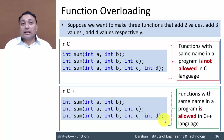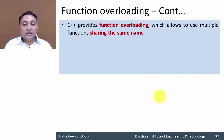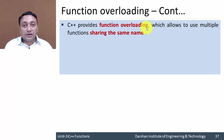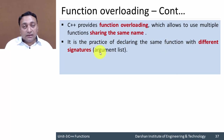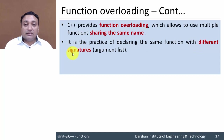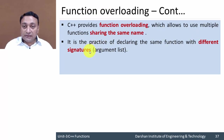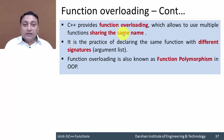Function overloading allows the use of multiple functions sharing the same name. The term 'overloading' implies we have more than one function using the same name. Function overloading is the practice of declaring the same function with different signatures, or argument lists. If two functions have the same number of arguments, same data types, and same order, they have the same signature — but in function overloading, we write functions with different signatures.